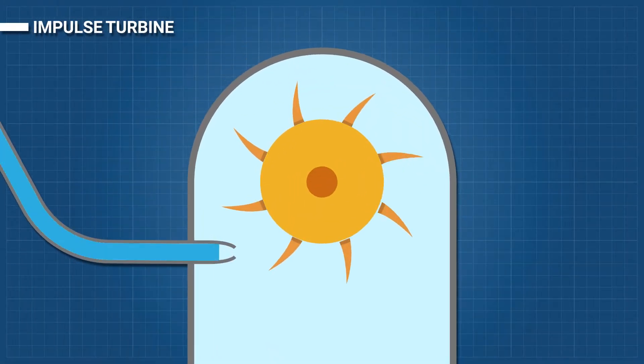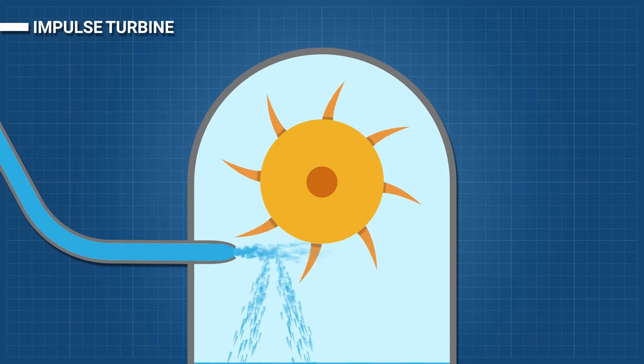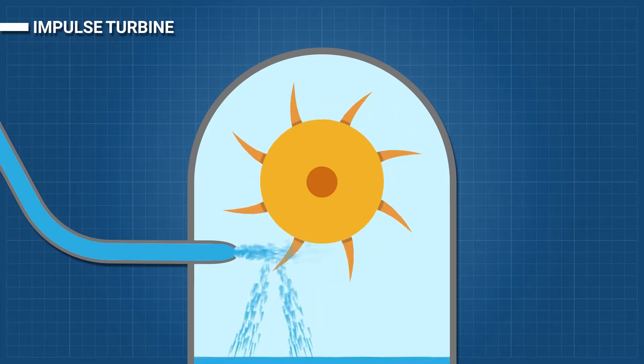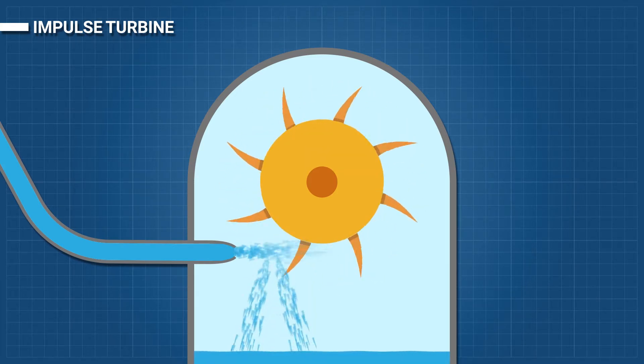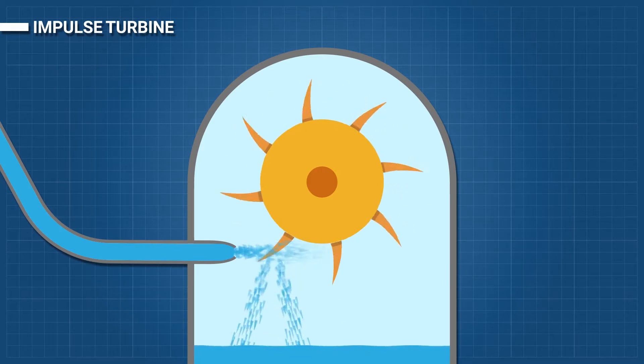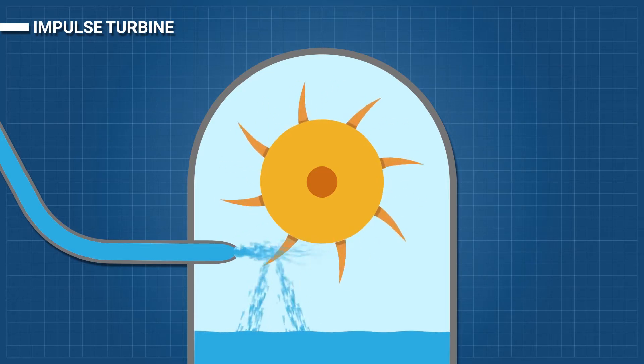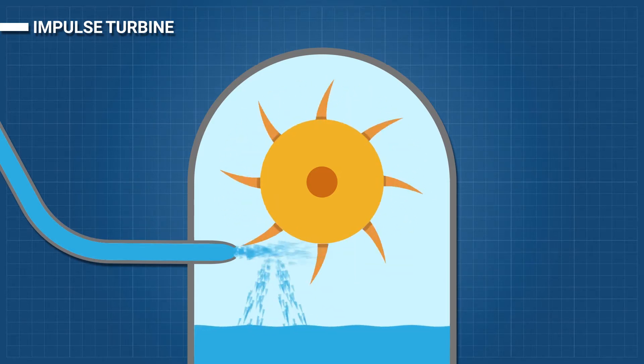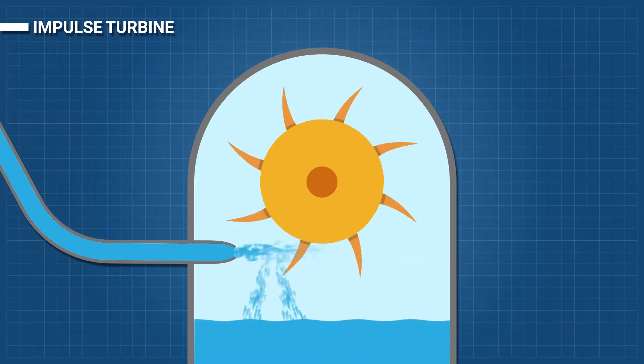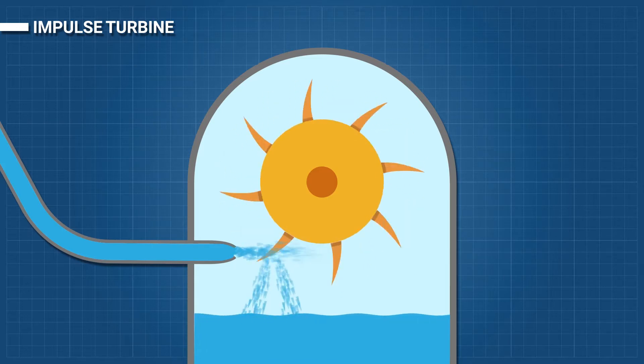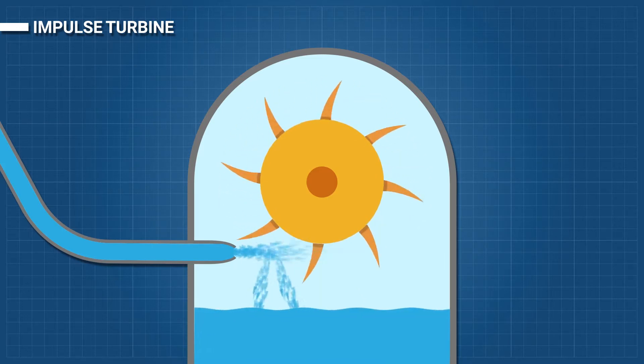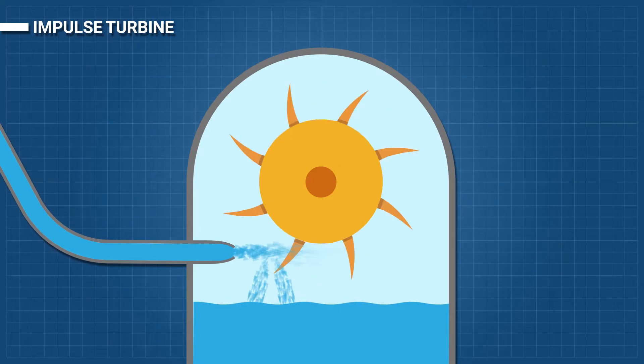Impulse turbine: The impulse turbine generally uses the velocity of water to move the runner and discharges at atmospheric pressure. The water stream hits each bucket on the runner. There is no suction on the downside of the turbine, and the water flows out the bottom of the turbine housing after hitting the runner. An impulse turbine is generally suitable for high-head, low-flow applications.